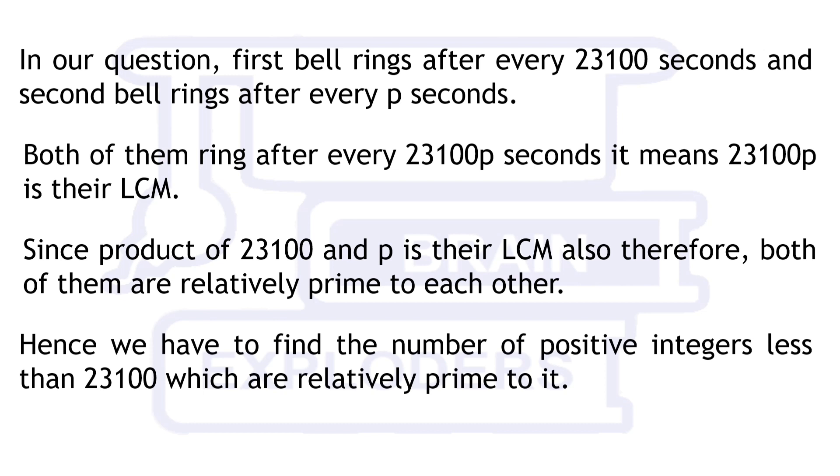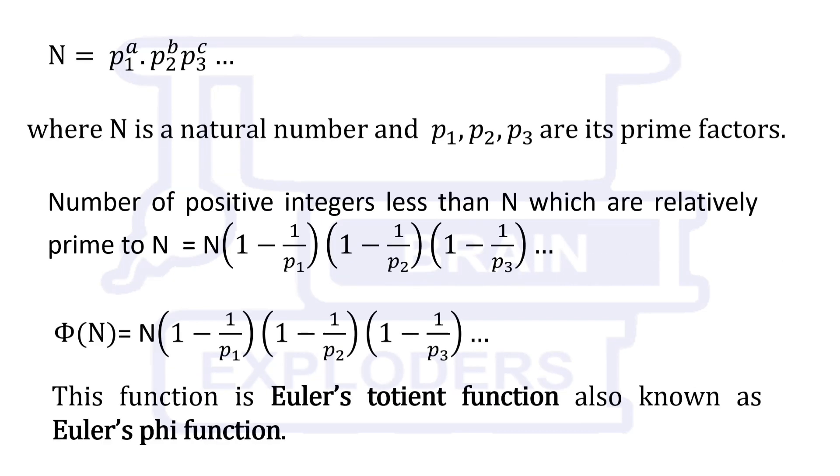Hence, we have to find the number of positive integers less than 23,100 which are relatively prime to it. This can be done with the help of Euler's totient function. We have made a video on its working. The link of the video is given in the i button.